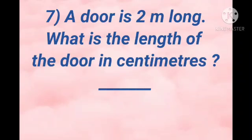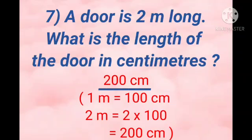Number 7. A door is 2 metre long. What is the length of the door in centimetres? Yes, answer will be 200 centimetres. If 1 metre is equal to 100 centimetres, then 2 metre will be 200 centimetres.